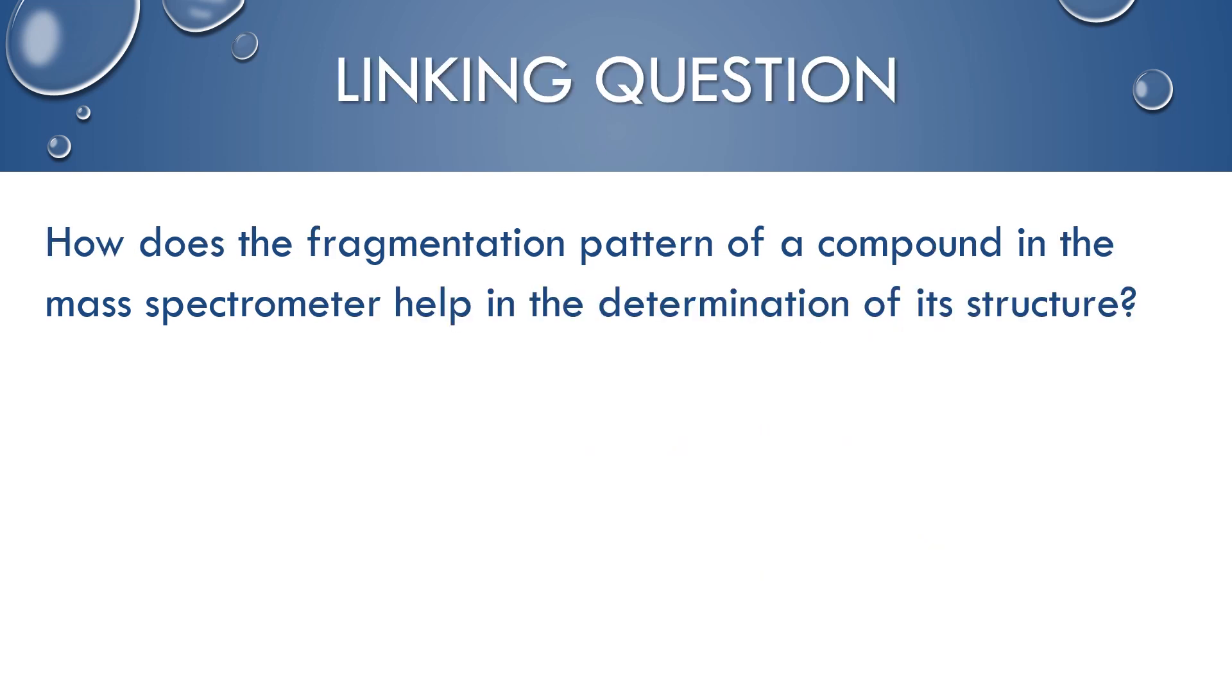We have just one linking question for this section, and it links to structure 3.2, which we will get to much later. But just in case you're going in a different order, how does the fragmentation pattern of a compound in the mass spectrometer help in the determination of its structure?